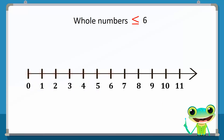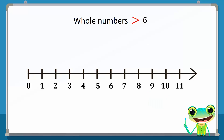Next, let's consider representing whole numbers less than or equal to 6 on a number line. We highlight all the whole numbers that are less than or equal to 6, which include 0, 1, 2, 3, 4, 5 and 6. Let us consider another example: we need to represent whole numbers greater than 6 on a number line. Greater than 6 will contain all whole numbers greater than 6, but will not include the number 6.